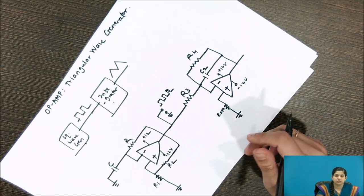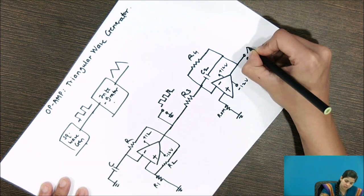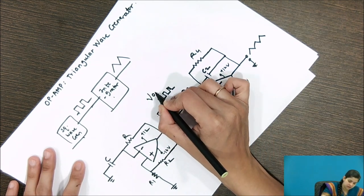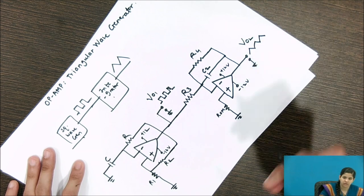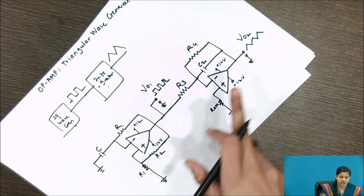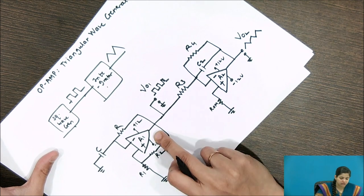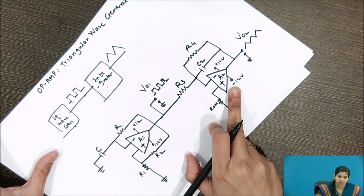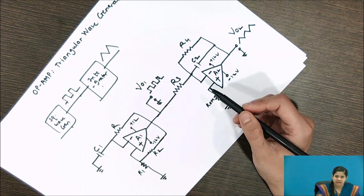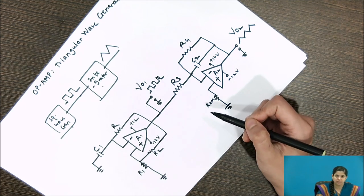This circuit converts the square wave into a triangular wave as output. Output 1 is the square wave and Output 2 is the triangular wave. We call the first op-amp A1 and the second A2. The output of A1 acts as the input for A2. This circuit requires two op-amps, two capacitors, and at least five resistors, meaning the component requirement is high.